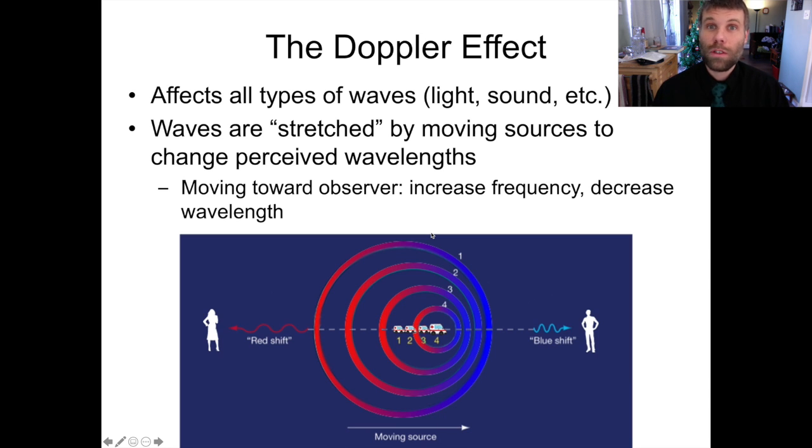So by observing a source of waves, whether it's sound or light, we can figure out whether that source is moving towards us, giving us a blue shift, or away from us, giving us a redshift. And if we're careful, we can even figure out the speed of the source by calculating the fractional change in wavelength.